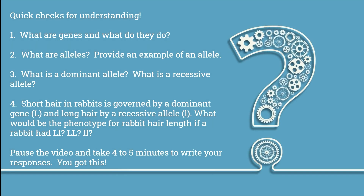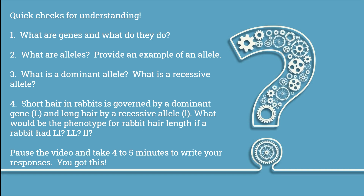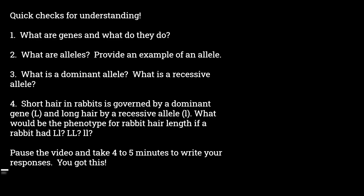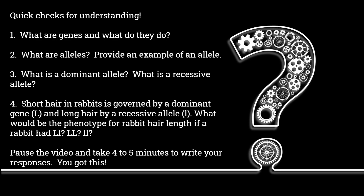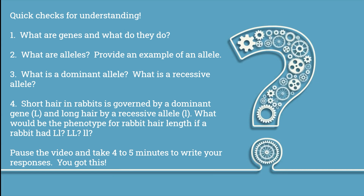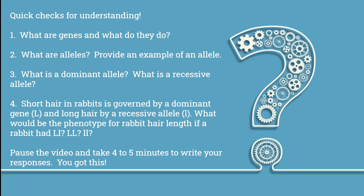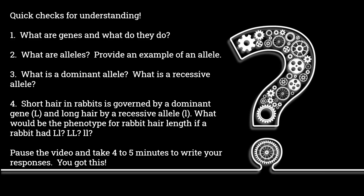Quick checks for understanding. Number 1: What are genes and what do they do? Number 2: What are alleles? Provide an example of an allele. Number 3: What is a dominant allele? What is a recessive allele? Number 4: Short hair in rabbits is governed by a dominant allele, capital L, and long hair by a recessive allele, lowercase l. What would be the phenotype for rabbit hair length if a rabbit had capital L lowercase l, two capital L's, or two lowercase l's? Pause the video and take 4 to 5 minutes to write your responses.